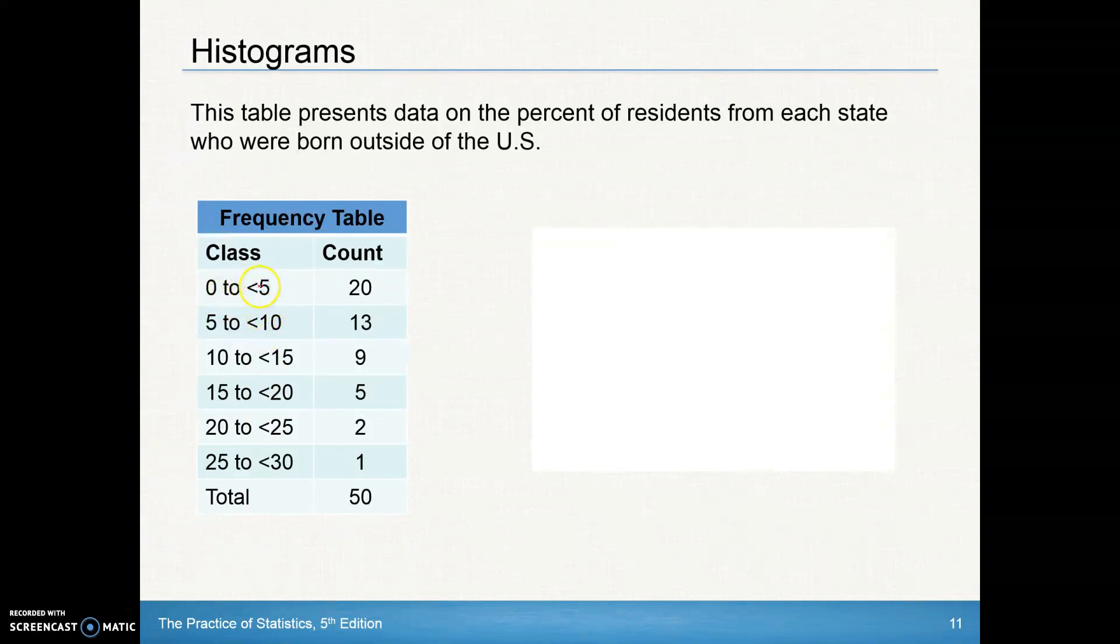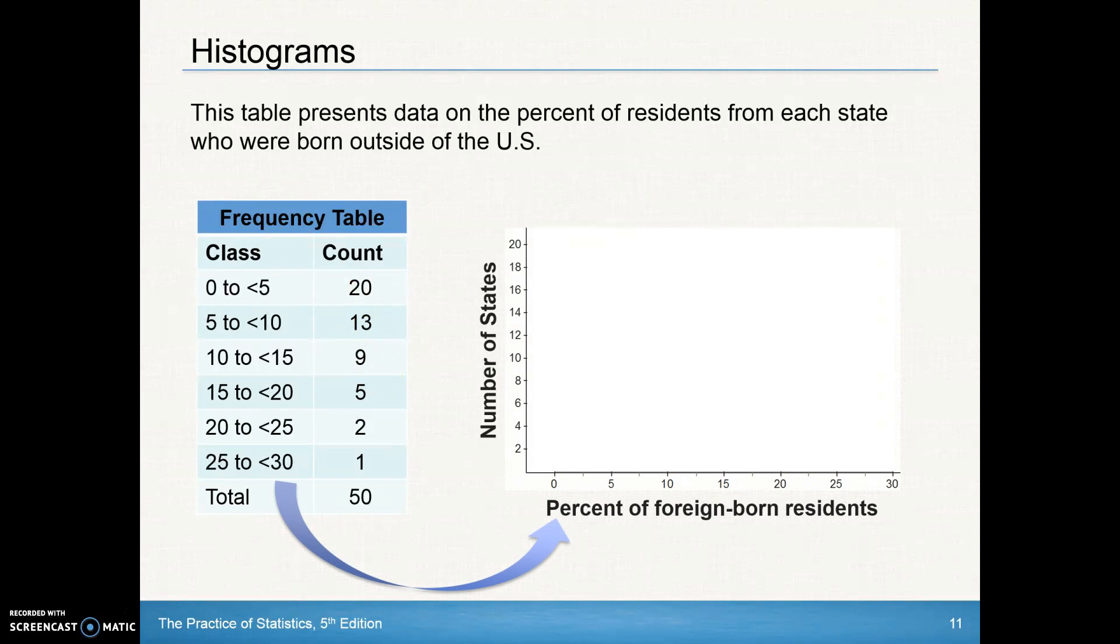This is kind of saying 0 to less than 5, so if it is 5, it's going to be in this category. So 5 to less than 10, 10 to less than 15. We can see these categories all have the same width. Somebody's already done the counts for each of these.